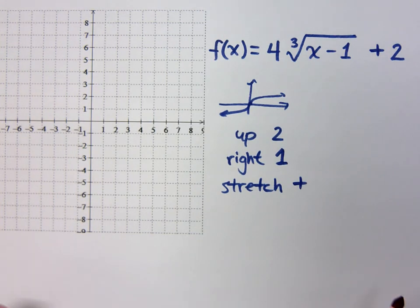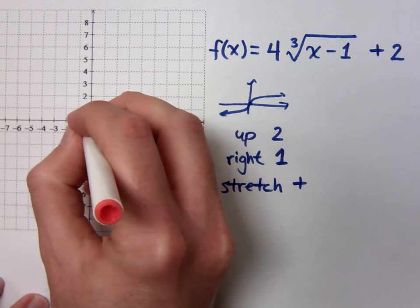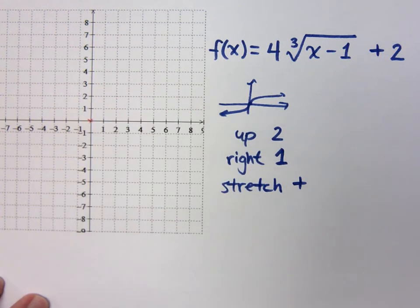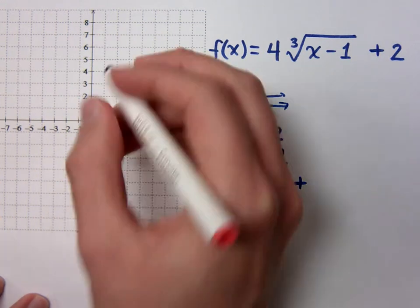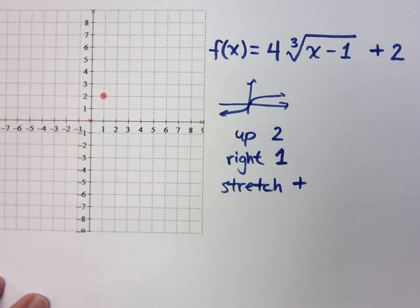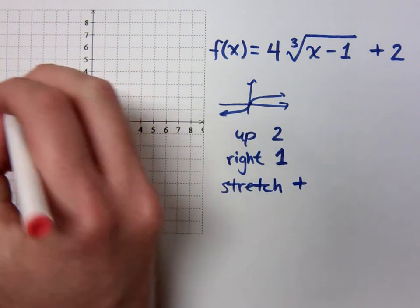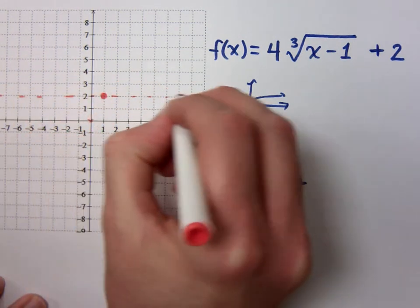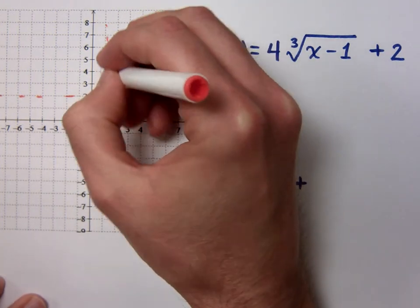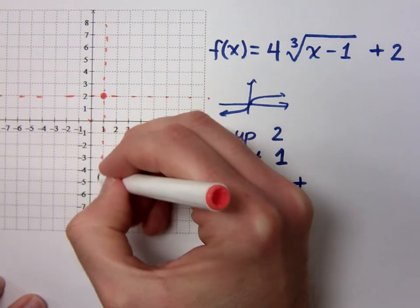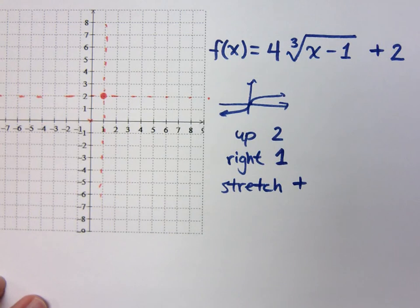Where's my base point now? It was here. Where is it? Right one and up two, so I'm going to be right here. Now, I'm going to do this. My new set of axes, are you with me? I've been doing this on every single problem. I want you to first graph the regular guy based off this.